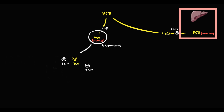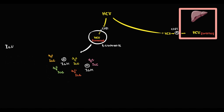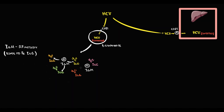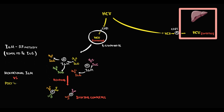In one scenario, infected B-lymphocytes begin to produce monoclonal IgM and polyclonal IgG antibodies — IgM antibodies are copies of each other, while IgG antibodies are different. A specific feature of IgM in hepatitis C infection is rheumatoid factor activity, meaning IgM antibodies can bind to the Fc portion of IgG. When they bind, they form immune complexes. The state with many such immune complexes composed of monoclonal IgM and polyclonal IgG is called cryoglobulinemia type 2.